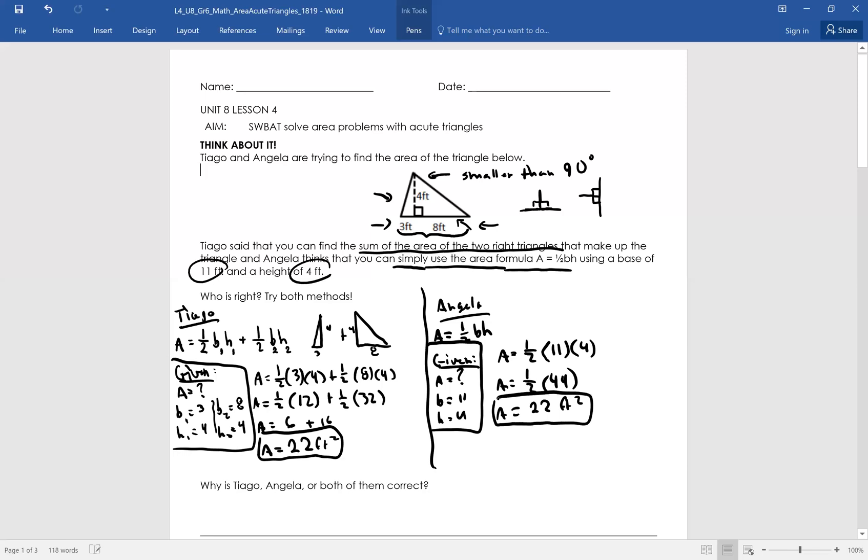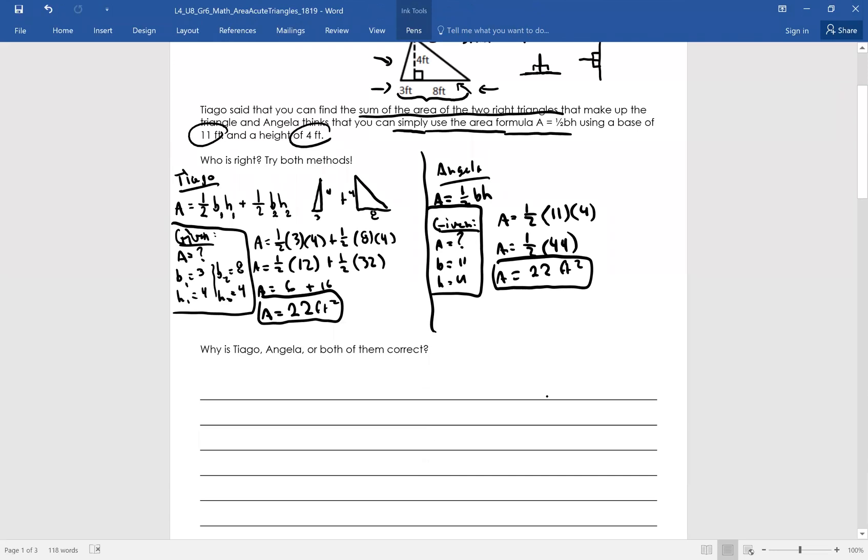So the question is, who's right? It looks like both Tiago and Angela are correct. How do we know that? Both are correct because the methods use different processes to reach the same answer. One method is only shorter than the other. As you can see, Angela did one thing that took less time, but Tiago did something that may be considered more complicated, but also gave us the correct answer. Tiago simply split out the shape into two shapes and Angela said, let's just combine the basis and figure out the area from there. So both are accurate and we will need to do both today. Okay.